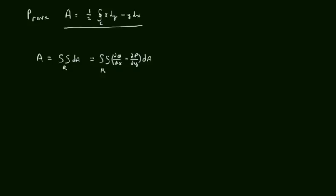As long as partial q partial x minus partial p partial y equals 1, then by Green's theorem, this integral would equal the closed line integral over c, the boundary of region R, of p dx plus q dy.